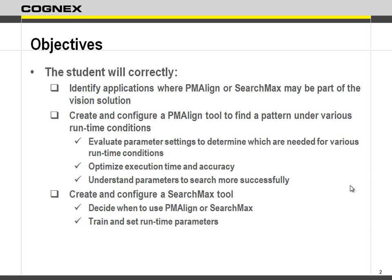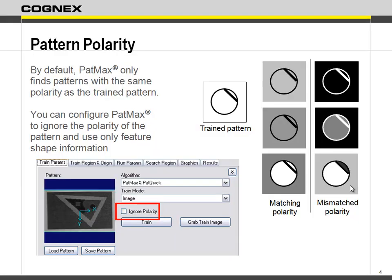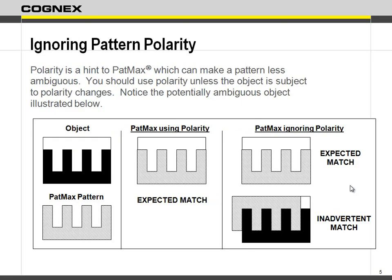Let's go back to PatMax for a moment and revisit it. One of the things you can do with PatMax during the training process is you can tell it to ignore polarity. What that means is when you train something, it might be a dark item on a light background or vice versa, but you're letting the system know you're allowing either - it can be light on dark or dark on light. Even though you have varying backgrounds, if you say ignore polarity, you would still be able to find it whether it's light or dark.